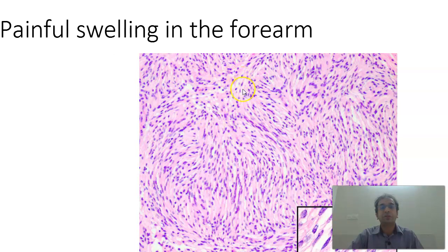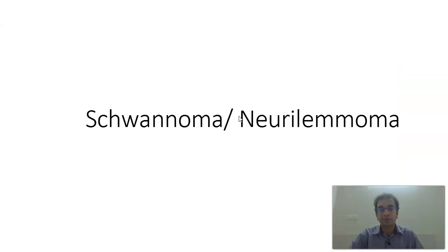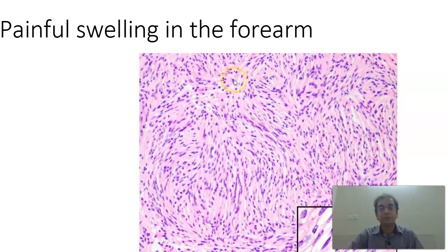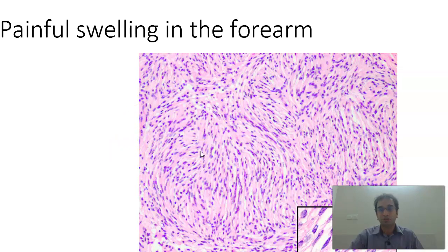Next case is a painful swelling in the forearm. What you find here is an arrangement of cells in the Antoni A and Antoni B patterns. The Antoni A pattern is seen here, and you should be able to appreciate the Verocay bodies — some kind of palisading is there. This is a slide of a schwannoma. Schwannomas are painful swellings. They will have Antoni A areas with the Verocay bodies and Antoni B areas with the myxoid, looser areas.